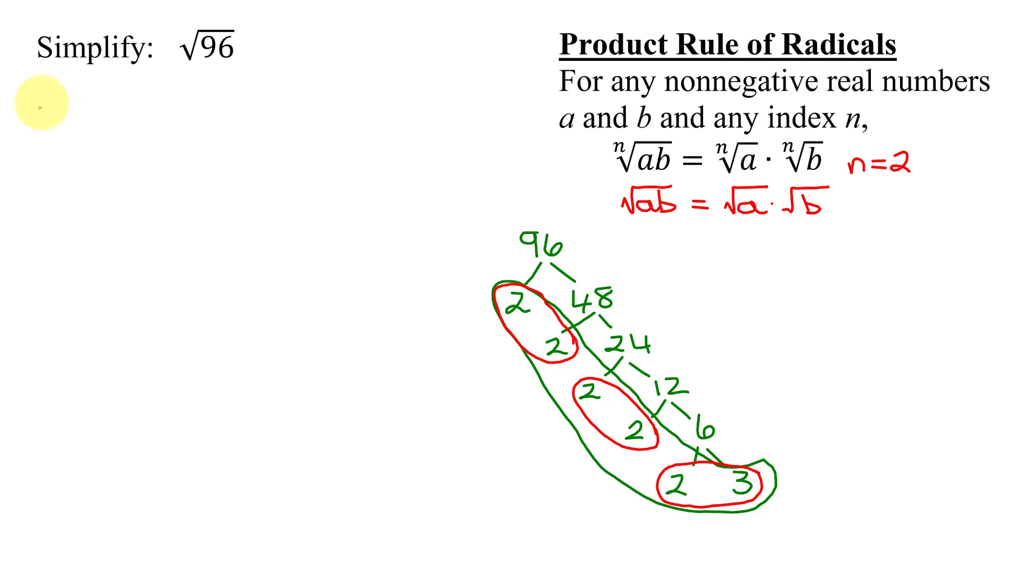So I know that the square root of 96 is going to equal the square root of 2 times 2 times 2 is 4 times 2 times 2 times 3 is 6. Now using this rule I can write that as the square root of 4 times the square root of 4 times the square root of 6.